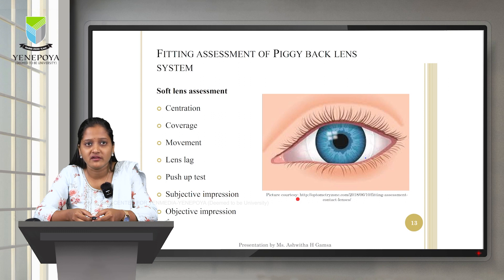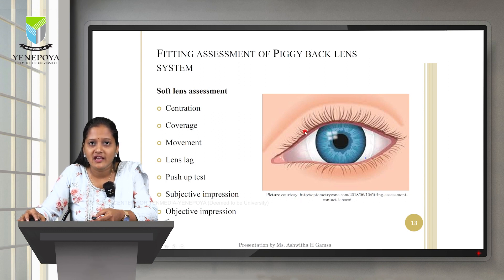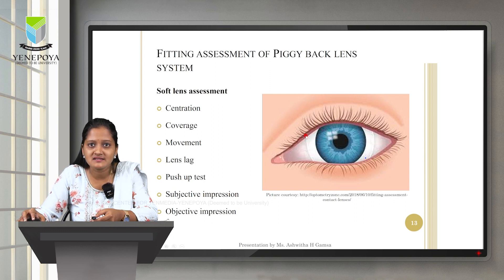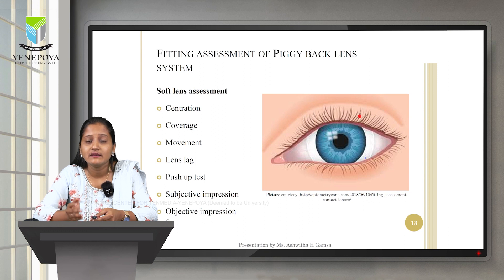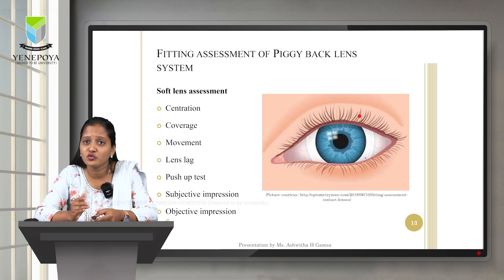The first parameter is centration and coverage. We check whether the contact lens is well centered on the cornea and whether it covers 360 degrees of the limbal region. Then we assess movement — asking the patient to blink and observing the amount, type, speed, and direction of lens movement. For lens lag, we ask the patient to make eye movements in all quadrants and assess how much the contact lens moves with the eye.